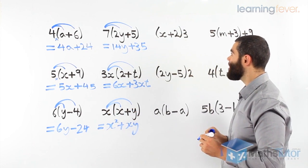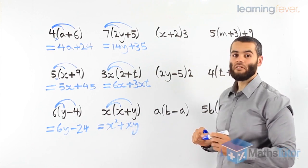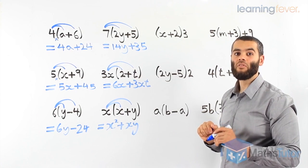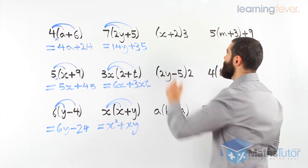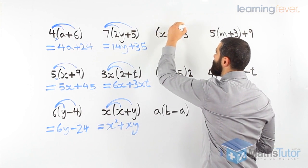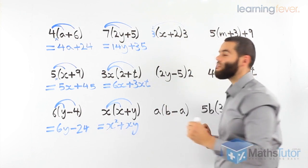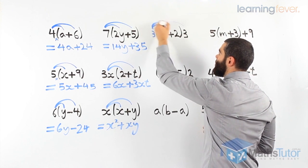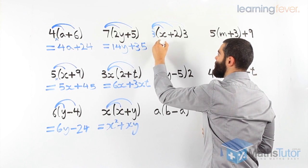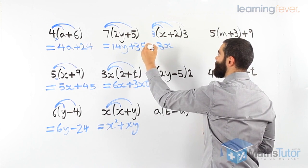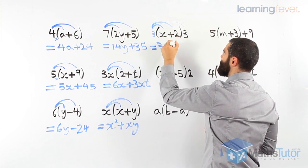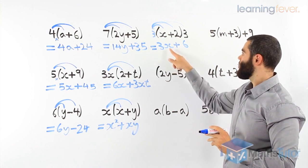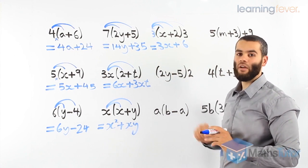In this example here, we have brackets, and then the three is on the other side. It still means the same thing. So, to make it easier, just swap the three and put it on that side. Doesn't matter if it's on that side, just swap it over. And then we do our arrow. 3 times x, 3x, and 3 times 2 is 6. 3x plus 6, we can't go any further.